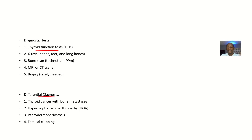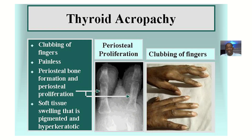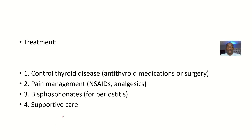For differential diagnosis, it may not be thyrotoxicosis, hyperthyroidism, or Graves' disease — it could actually be thyroid cancer with metastasis into the bones. It could also be hypertrophic osteoarthropathy, pachydermoperiostosis, or familial clubbing. All of these are differential diagnoses to consider.